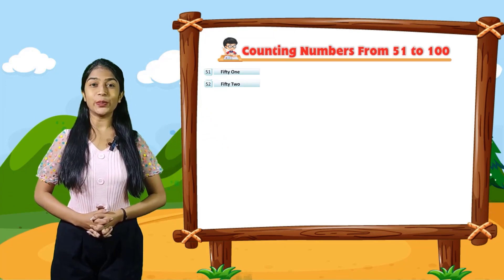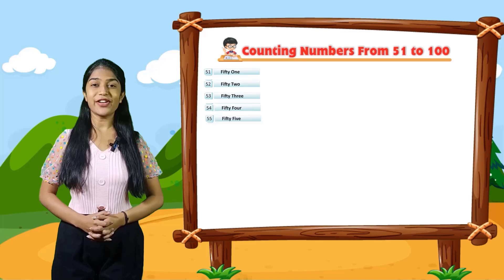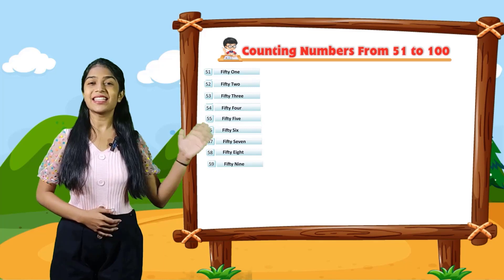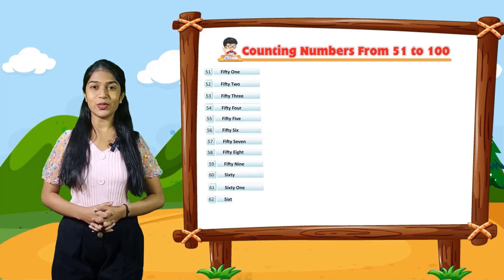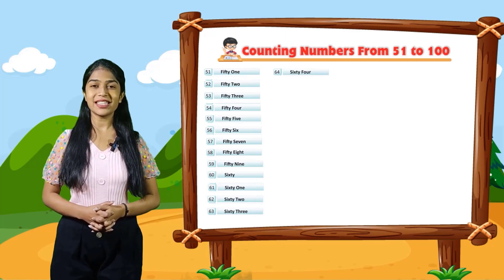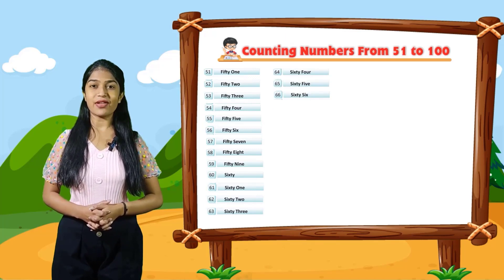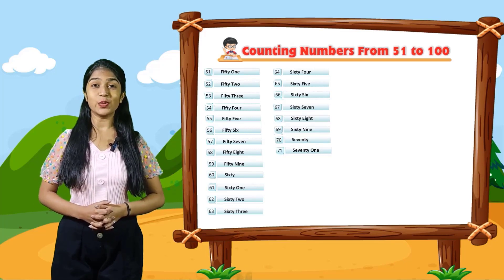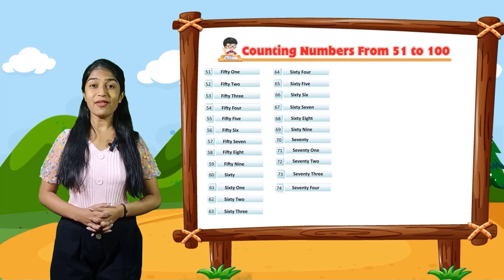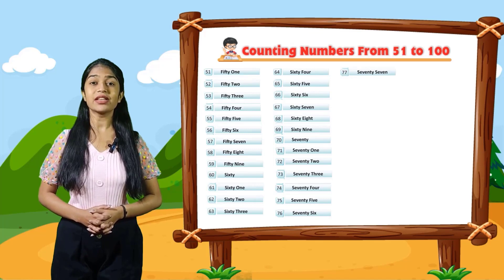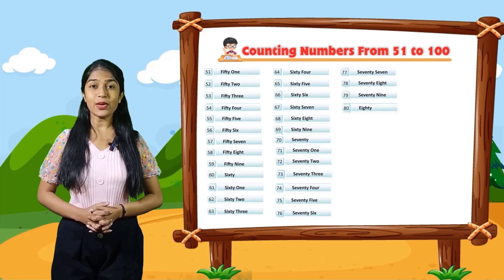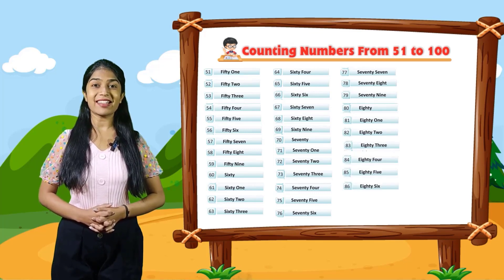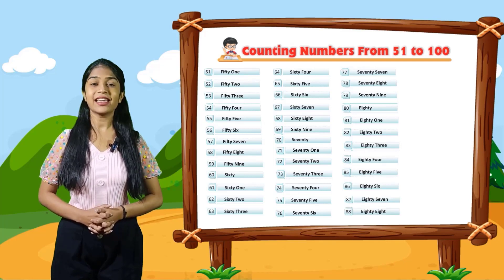51 52 53 54 55 56 57 58 59 60 61 62 63 64 65 66 67 68 70 71 72 73 74 75 76 77 78 79 80 81 82 83 84 85 86 87 88 89.